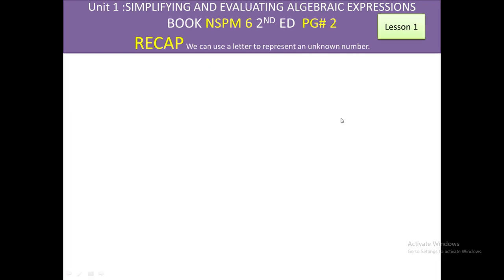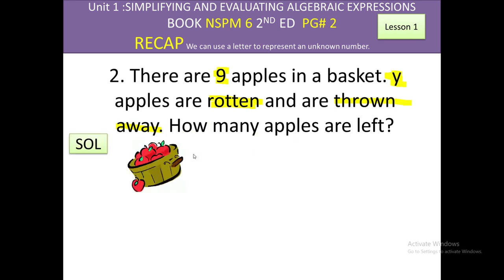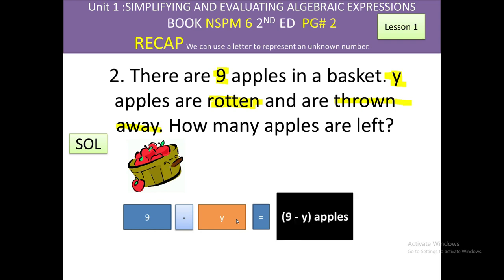Question two: There are nine apples in the basket. Y apples are rotten and thrown away. We subtract y apples because we are throwing them out, so we will subtract y apples from the basket. Remaining apples will be equal to nine minus y apples.